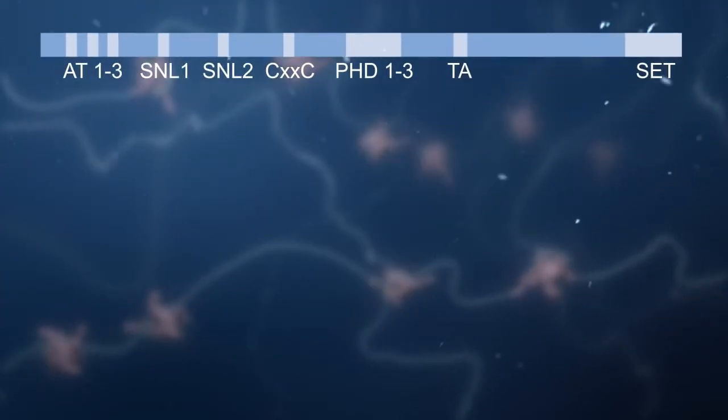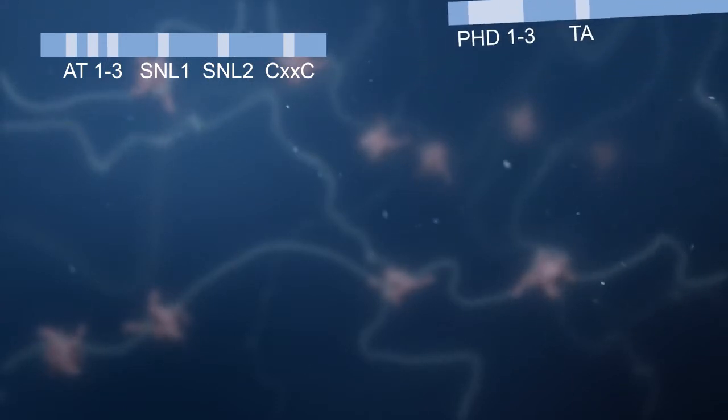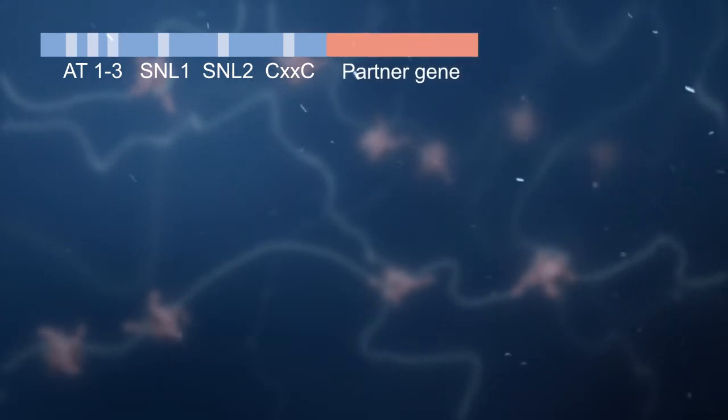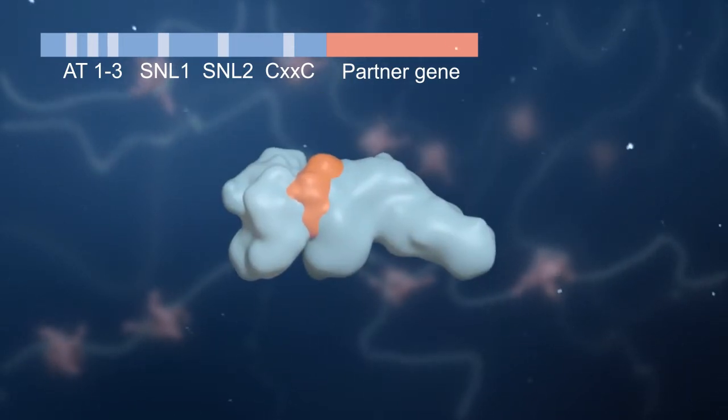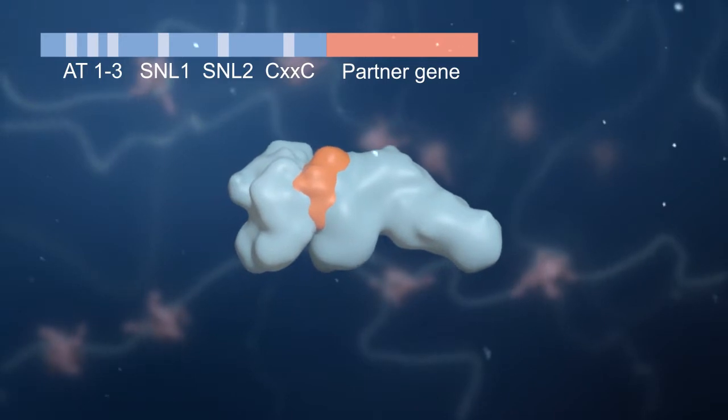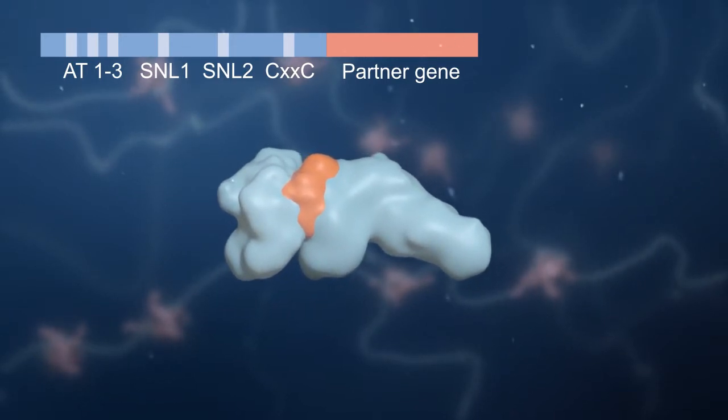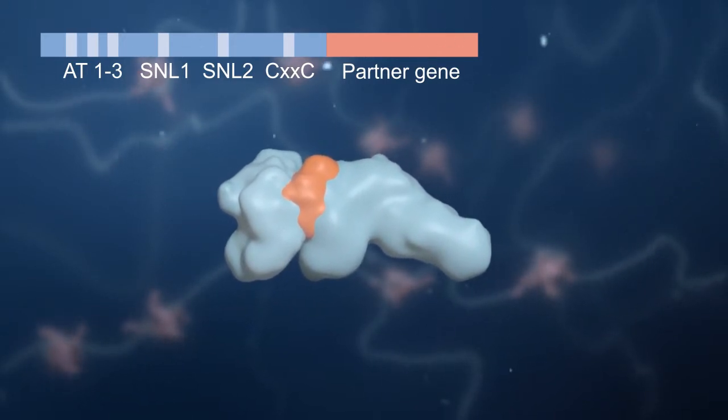In patients with mixed lineage leukemia, chromosomal translocations cause in-frame fusions of MLL to many partner genes that typically result in oncogenic chimeric proteins. These chimeric proteins retain only one-third of MLL on the N-terminus and become more stable than the wild-type MLL proteins.